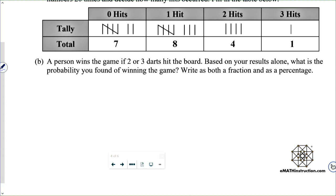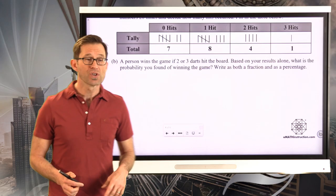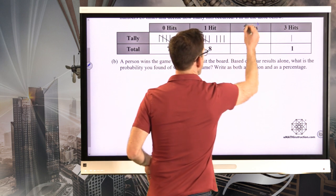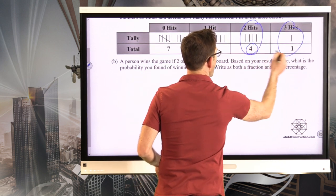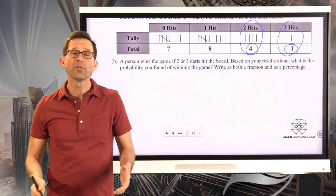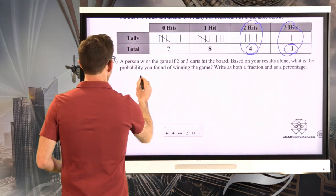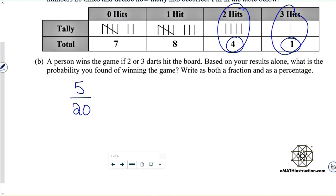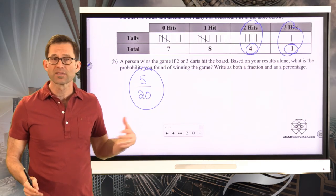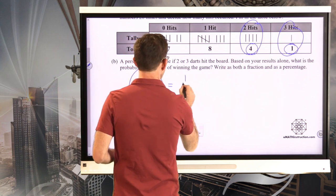Now let's take a look at letter B and work it with my results. A person wins the game if two or three darts hit the board. Based on your results alone, i.e. my results, what is the probability you found of winning the game, as both a fraction and as a percentage? So both of these categories result in a win. And I had five of them. But five out of what? Well, it was out of 20. I played the game 20 times.